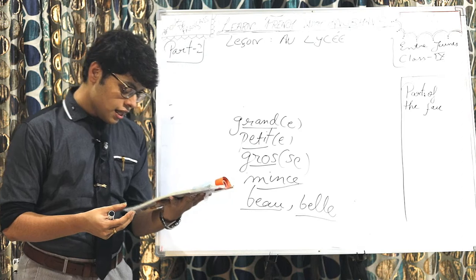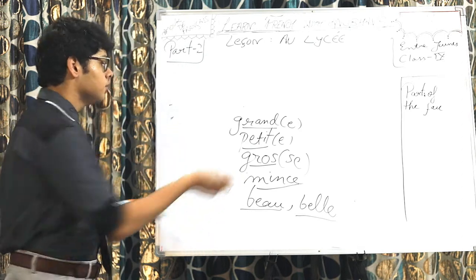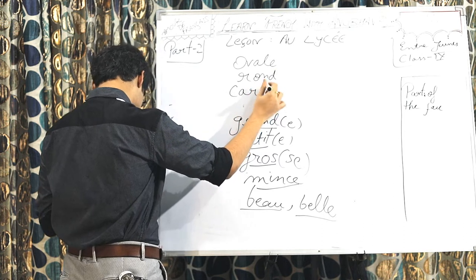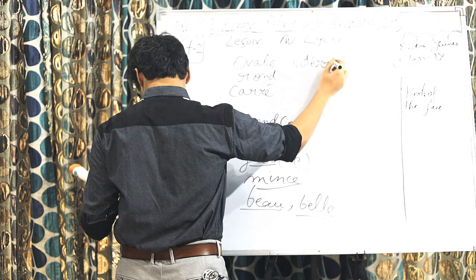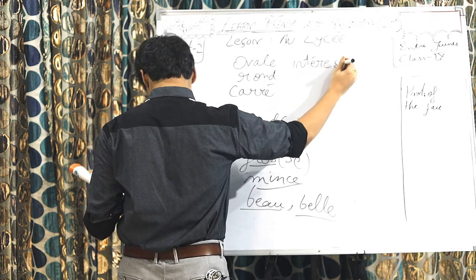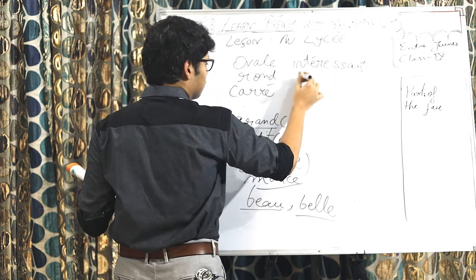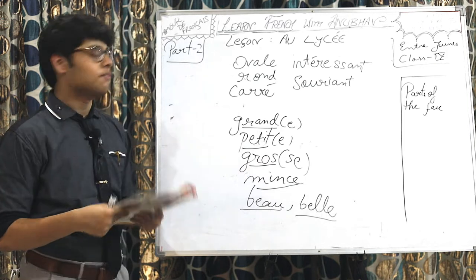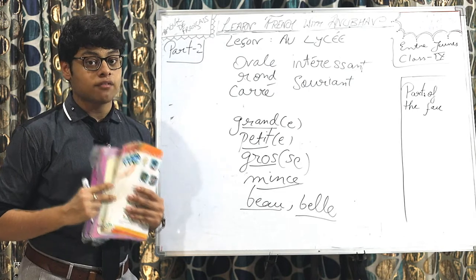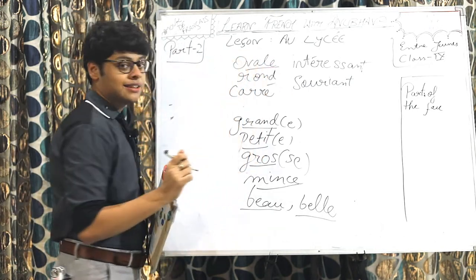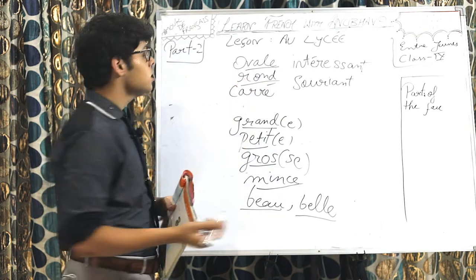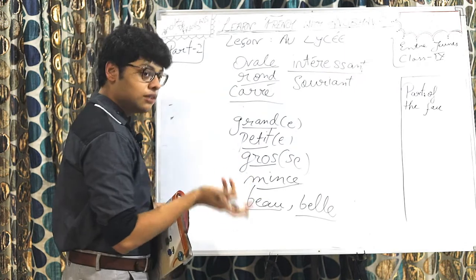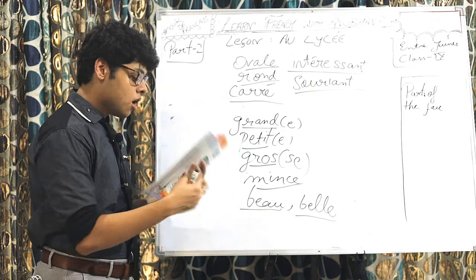Now let's move to the fourth point. Il, elle, a, un visage, oval, rond, carré, attaressant, sudion. Visage is face. We know very well. So, there are some shapes given right here. Like, what's the shape of the face? Does the person have an oval face? Oval. Or, the person has a raw face? Round. The person can have a carré face? Square. Interessant. Interesting face. Interessant visage. Sudion. As we have already discussed, it means smiling or happy face.